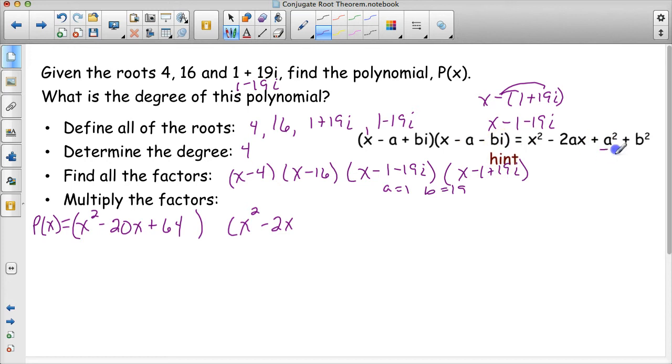Then this says that I want to take a and square it. Well, a is 1 and 1 squared is 1, so I'm going to add 1. Finally, I want to take my b term and square it. So b is 19, and when I square 19, I get 361.